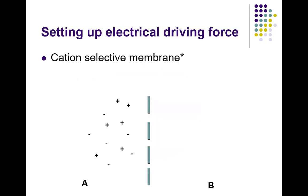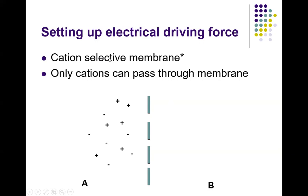The electrical driving force is all about differences in charge inside and outside the membrane. A cation selective membrane allows only positive ions to pass through, regardless of what the charge is inside and outside. In this example, one side has a bunch of positives and equal negatives; the other side has neither. The positives will naturally move from the high concentration side to the low concentration side.